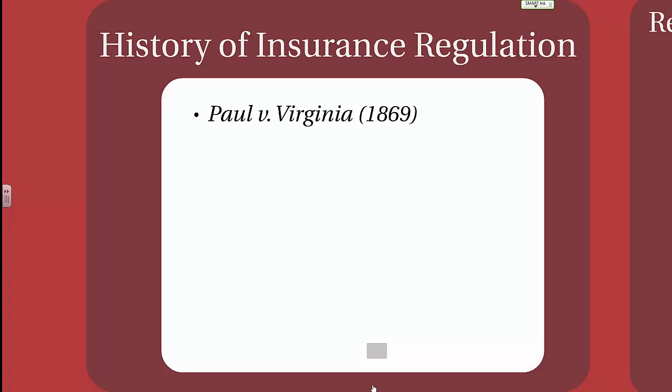More importantly, this established the precedent in 1869 that insurance was not interstate commerce, but instead a personal contract between two people, and therefore should be regulated by state governments and not the federal government.